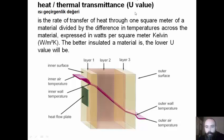Thermal transmittance, or U-value, is the rate of transfer of heat through one square meter of a material, divided by the difference in temperatures across the material, expressed in watts per square meter Kelvin (W/m²K). The better insulated a material is, the lower U-value will be.